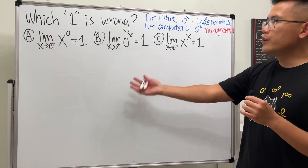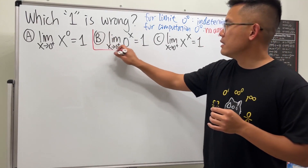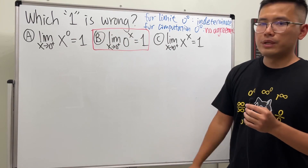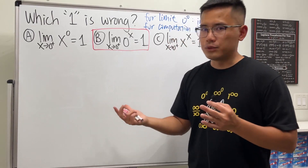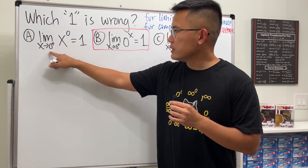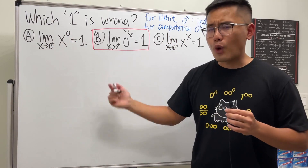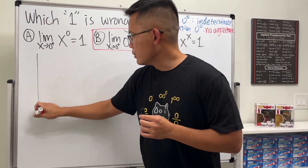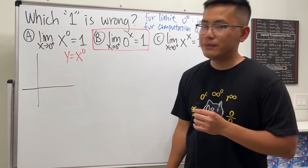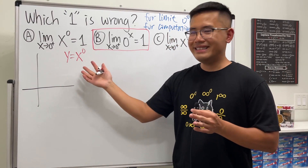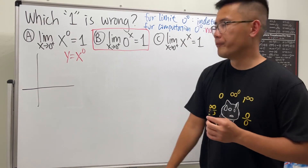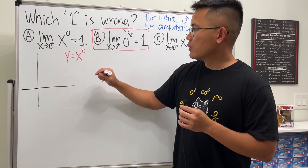Which one is wrong? I'll tell you: B is wrong. I'm going to use graphs to show all three situations. For the first one, we have the limit as x approaches zero plus of x to the zero power. Let's graph y = x^0 first.